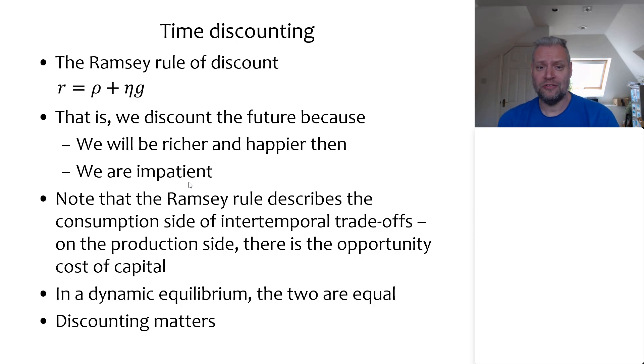The second component of the Ramsey rule is essentially a measure of our impatience. We discount the future because it's the future. We care less about the future than we care about the present. This derivation of the Ramsey rule is essentially one that is purely based on decisions about consumption and saving.